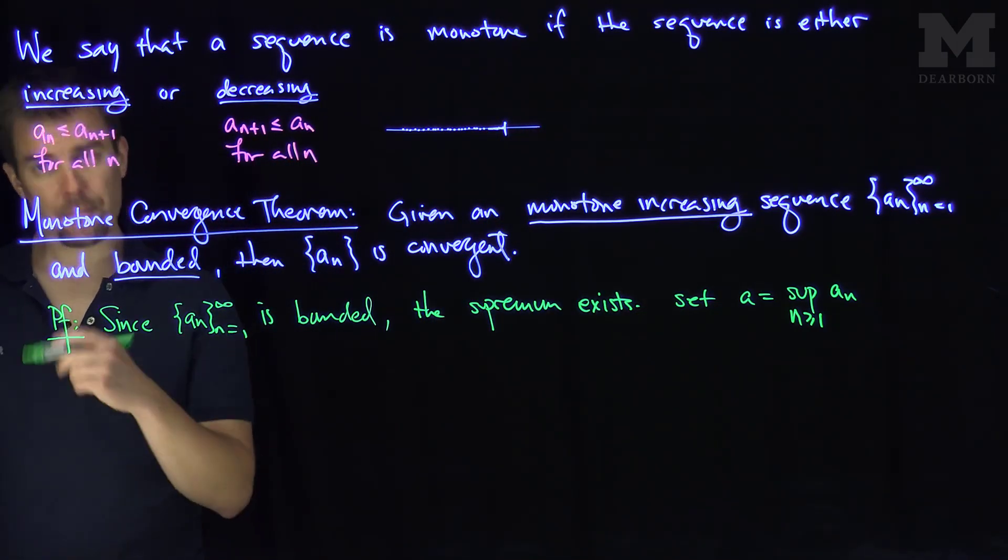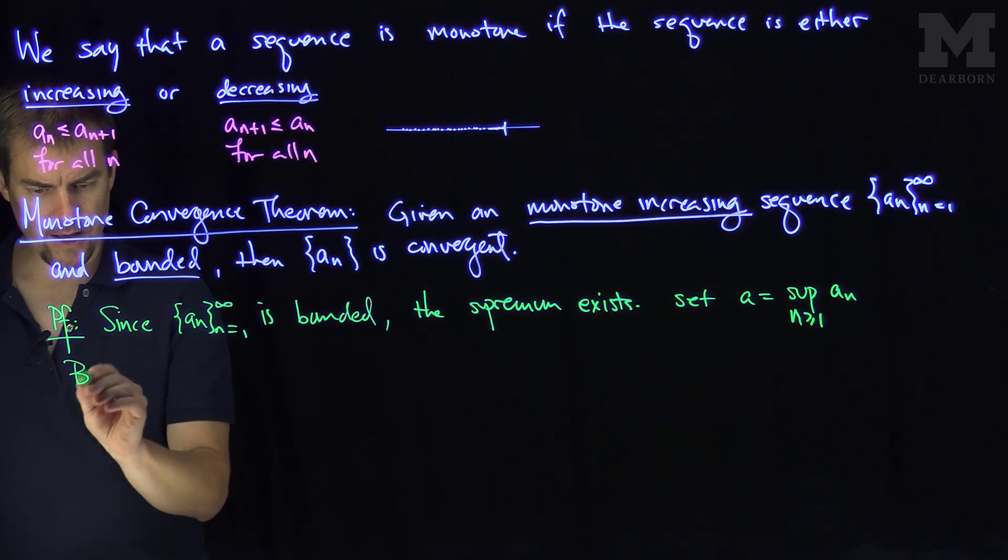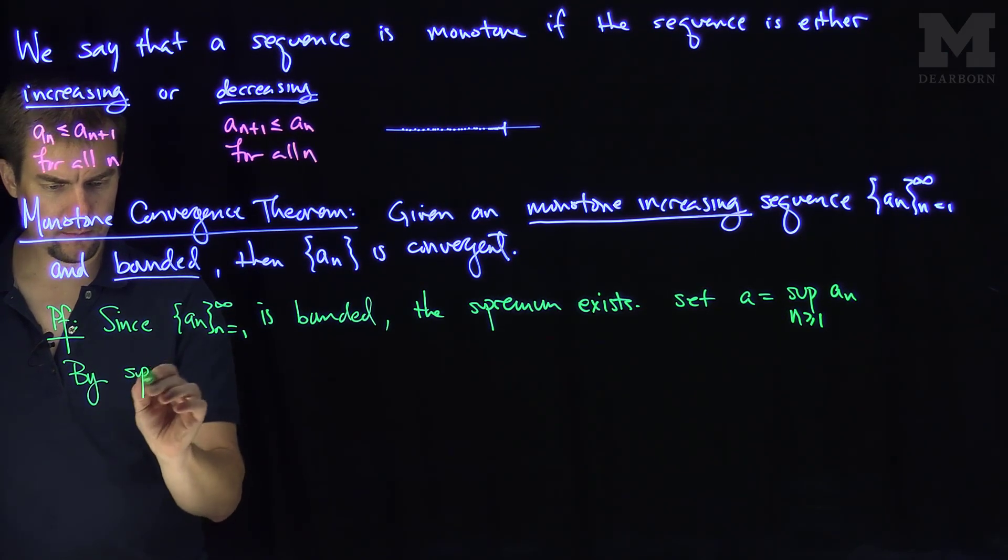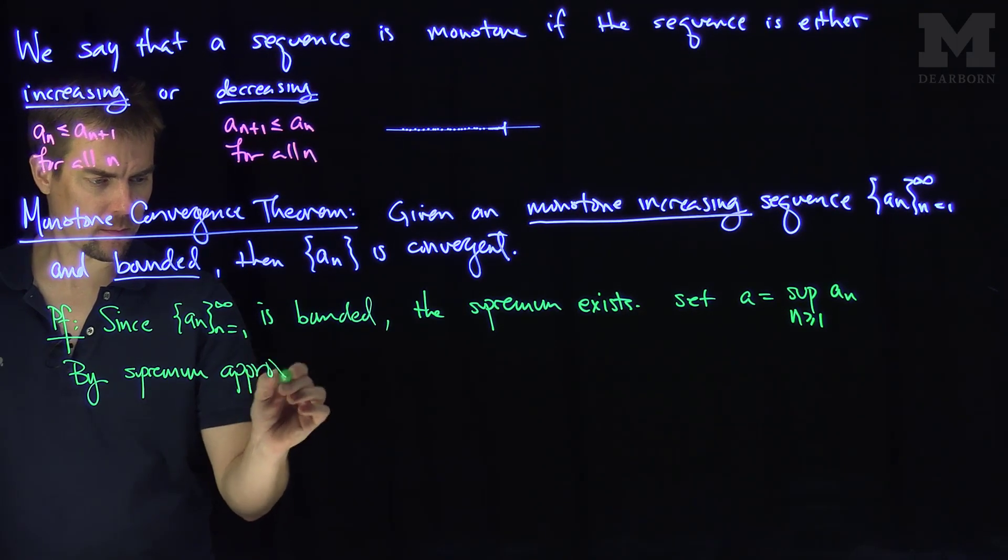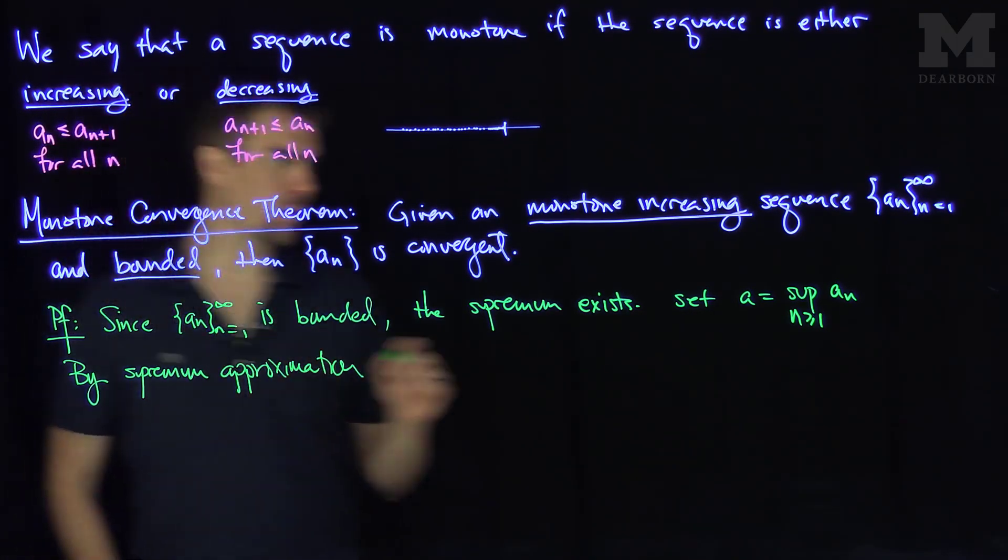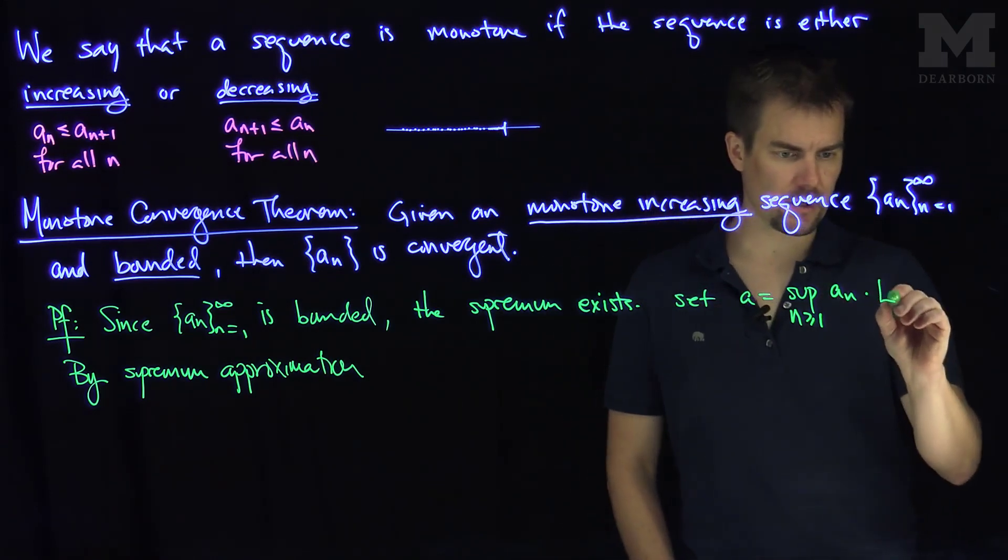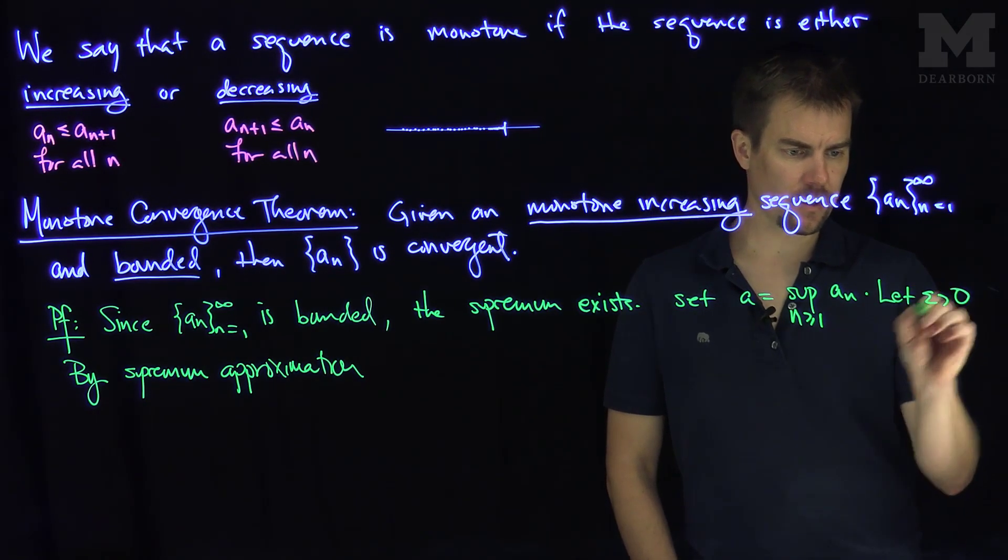By the approximation property, by supremum approximation - let epsilon be greater than zero.